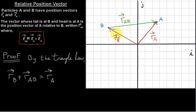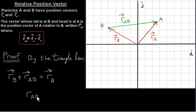We join the tail of the first vector, which is Rb, to the head of the second vector, which is RAB, and you can see we get vector Ra. So now we just rearrange this to get RAB equals vector Ra minus vector Rb.